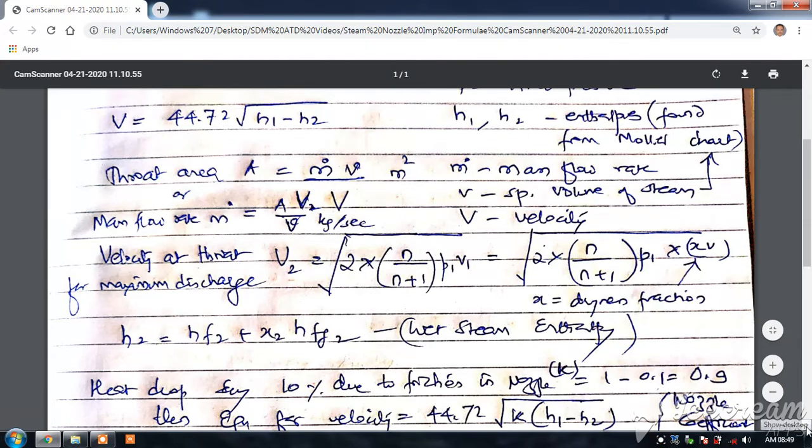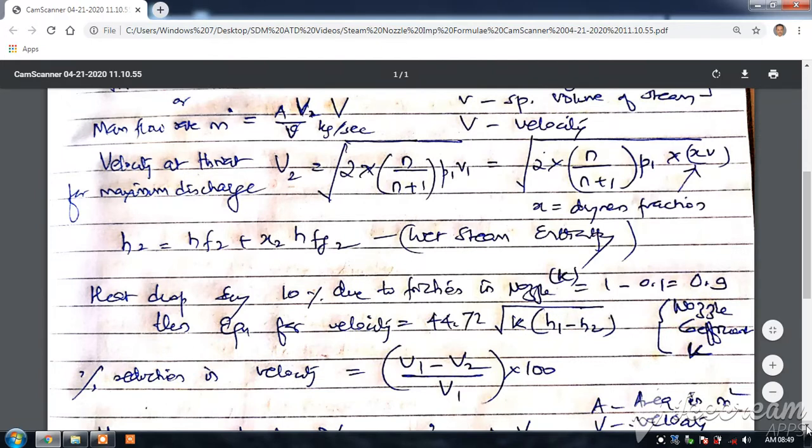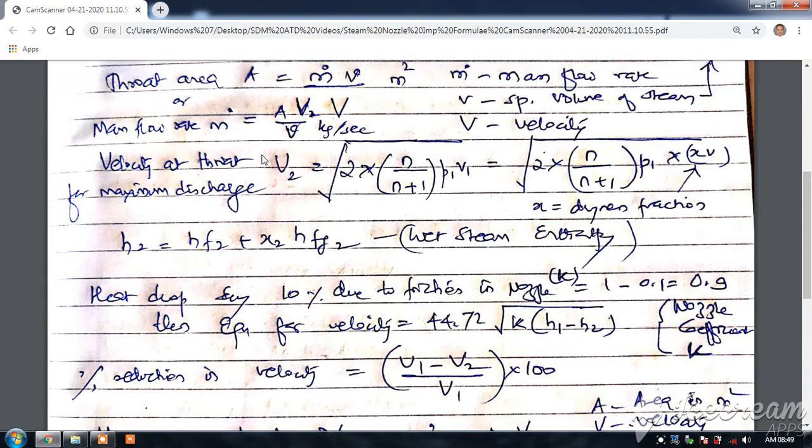Now, next equation we will see: velocity at throat for maximum discharge, the standard relation for velocity at throat for maximum discharge. V2, we are considering 2 for a throat condition, is square root of 2 into in bracket n divided by n plus 1 bracket close P1 V1.